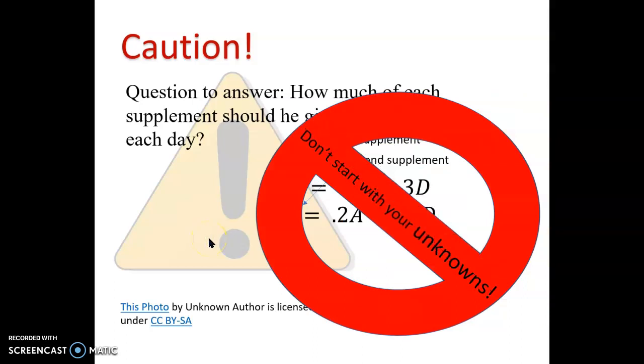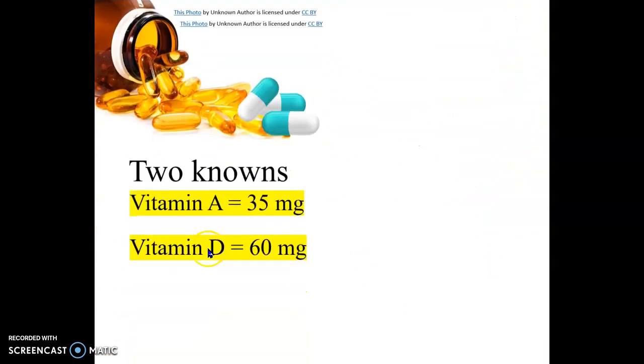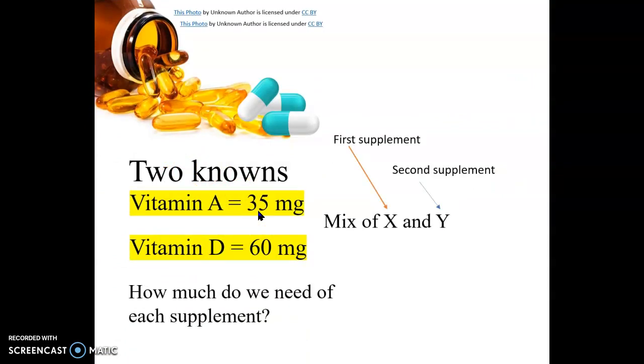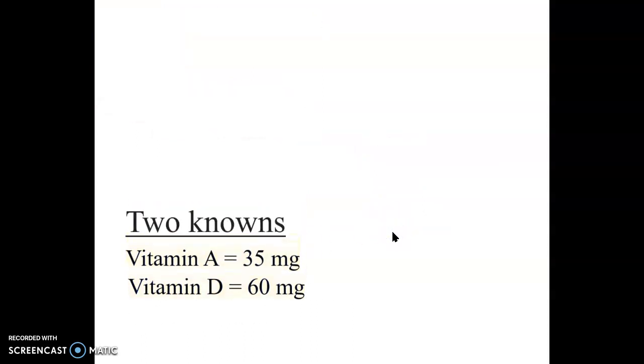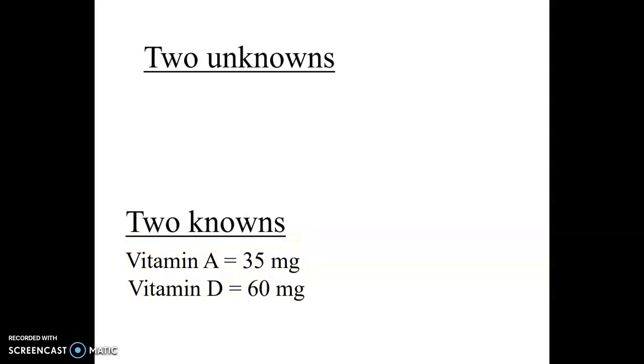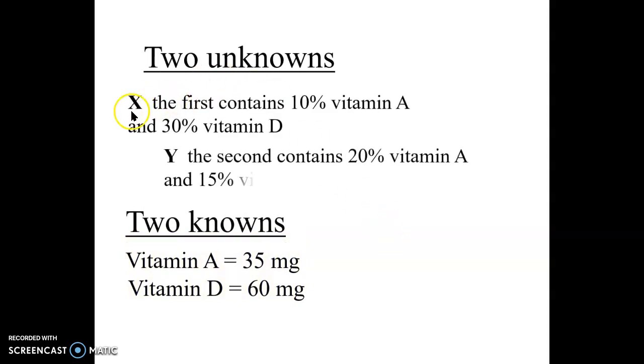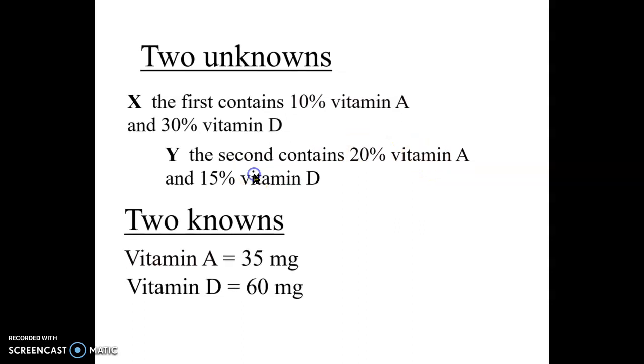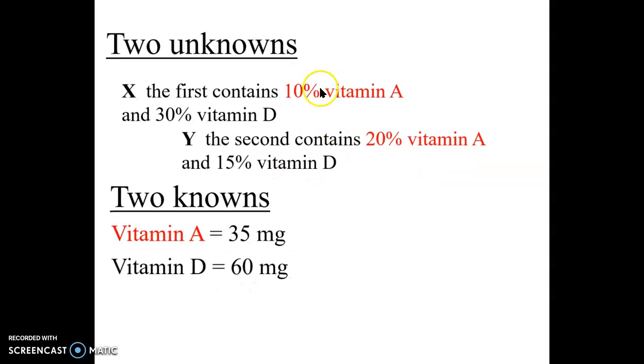So let's not start with what we don't know. Let's try starting with what we do know. We do know vitamin A has to be 35 milligrams, vitamin D 60, and we're going to need a mix. So we also know the first supplement has so much vitamin A and D, second has so much vitamin A and D. And so let's just look at vitamin A first. If we have 10% of the X and 20% of the Y.